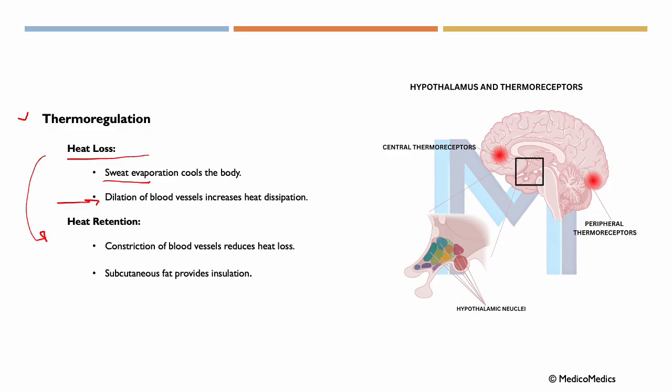Now in opposite to heat loss, if we want to do heat retention, we have constriction of blood vessels. So instead of vasodilation, we have vasoconstriction, which reduces heat loss by limiting blood flow to the skin. And then we have subcutaneous fat, which provides insulation, minimizing heat transfer to the environment.